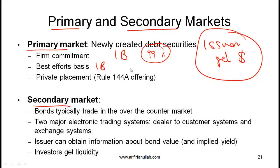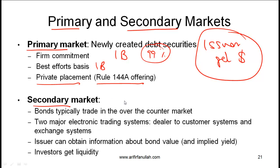On a best efforts basis, the investment bank does not make a firm commitment but tries to find investors and obtain the best possible price for the issuer. The third arrangement is private placement, where the issuer sells bonds directly to private investors — typically institutional investors — under what is called a Rule 144A offering.